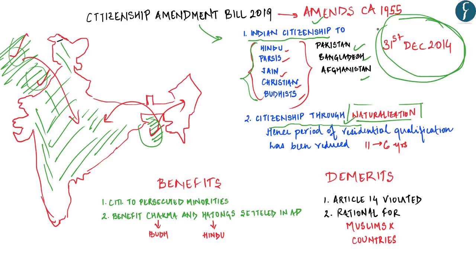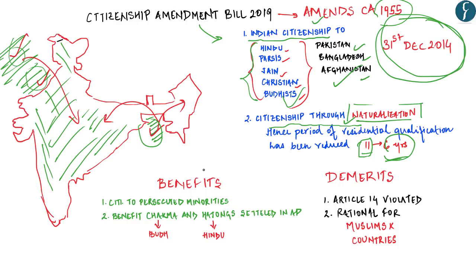These amendments have raised both appreciation and questions. The first benefit is that it provides citizenship to persecuted minorities from neighboring countries. We know that in Pakistan, Afghanistan and Bangladesh, Hindus and Buddhists have been under persecution, and this will be a big relief for communities migrating to India to save themselves. The second benefit is that it will enable Chakmas — traditionally Buddhist — and Hajongs — who are Hindus — to attain Indian citizenship.